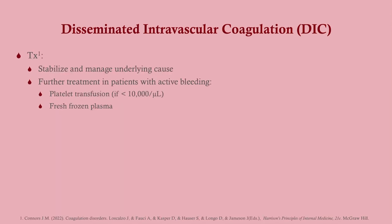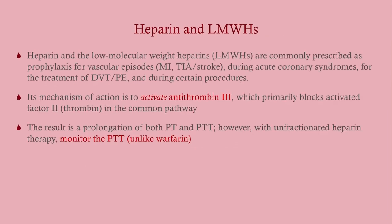Treatment for DIC: stabilize the patient and manage the underlying cause. Further treatment depends on whether there is active bleeding. If platelets drop below 10,000, transfuse platelets to slow bleeding, though in general we try to avoid giving platelets and observe. Fresh frozen plasma can also be given to replace clotting factors.